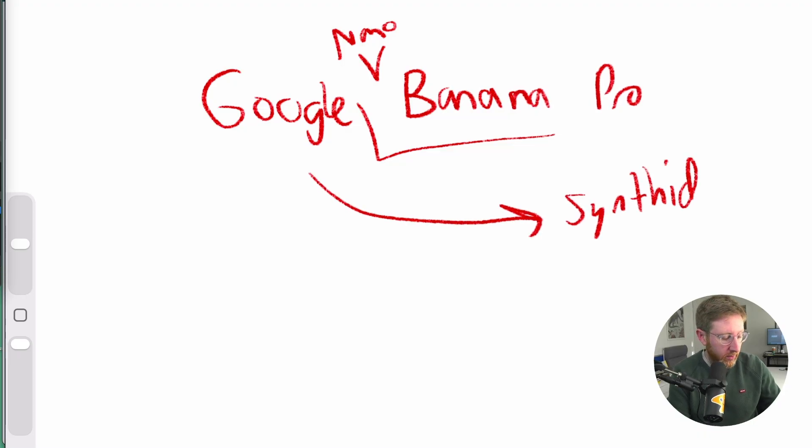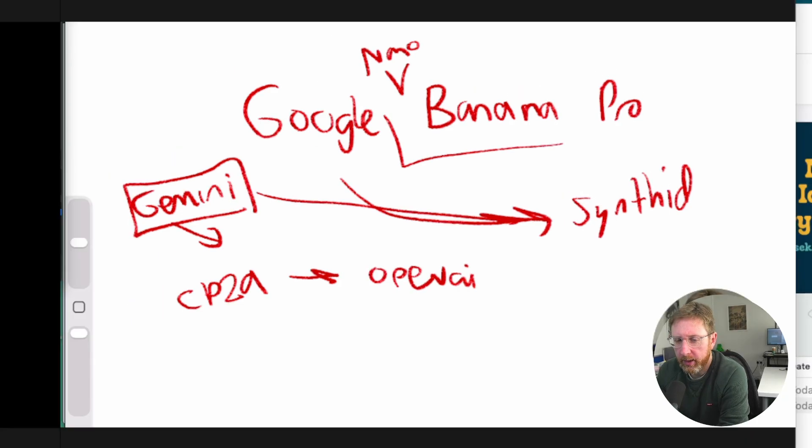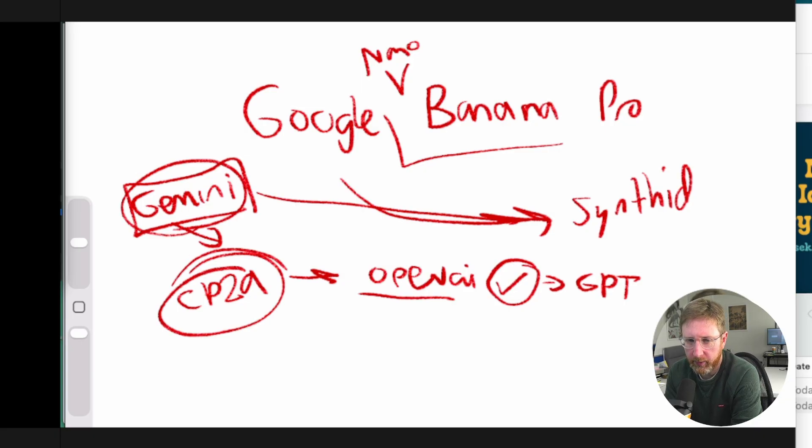Actually there's, there's a couple of ways of checking these things. So there's, there's Gemini, which you can use to check, which can determine if it's using synth ID. And then there's something called, I think it's called a CP2A, which can check open AI. Sorry, my microphone dropped out right around there. So yeah, it's called C2PA, C2PA and that checks open AI images as well. So you can find a C2PA checker online. If you upload images, they're generated via GPT, then that can verify that those are also AI generated.